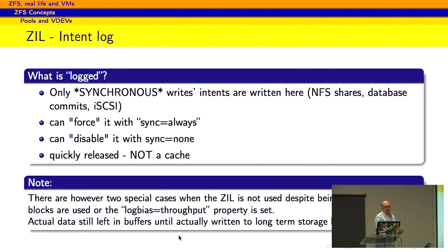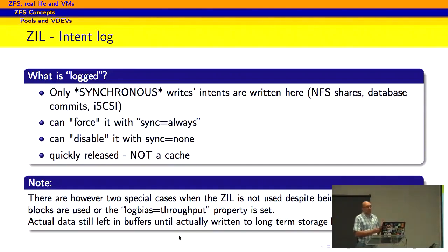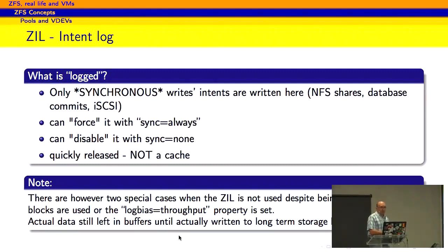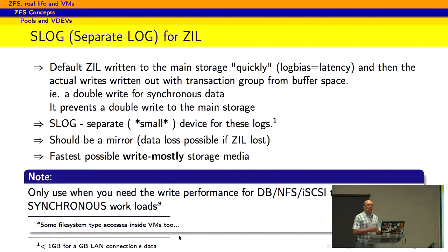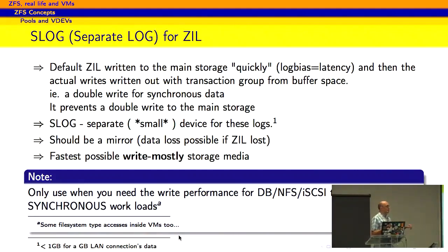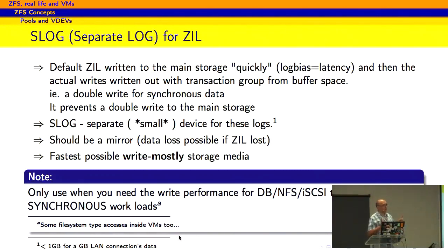The ZIL — the ZFS Intent Log — is the part where it stores information about synchronous data it's going to write out to disk. It's only used for synchronous writes like NFS shares, database commits, iSCSI-type things; it's not used for normal data being written to disk. You can force it on or off, but do note the ZIL is not a cache. When you have high synchronous data writes like a database or iSCSI or NFS, that's where you want the ZIL separate from the actual storage. Using the S-log device, you write the intent to a separate, very small device — just the intent, not the actual data for longer caching.